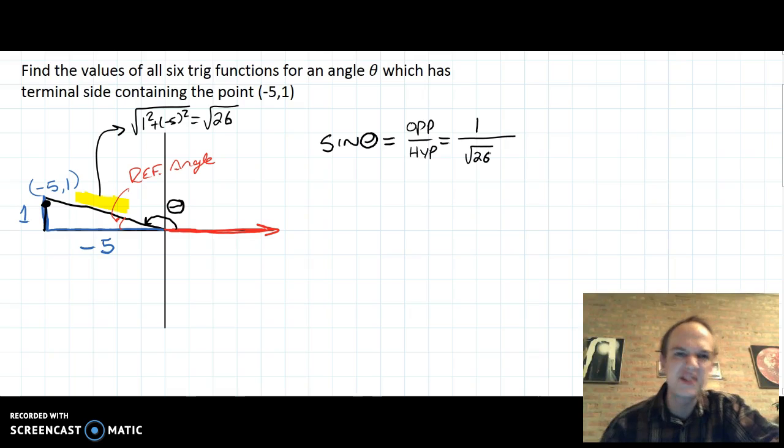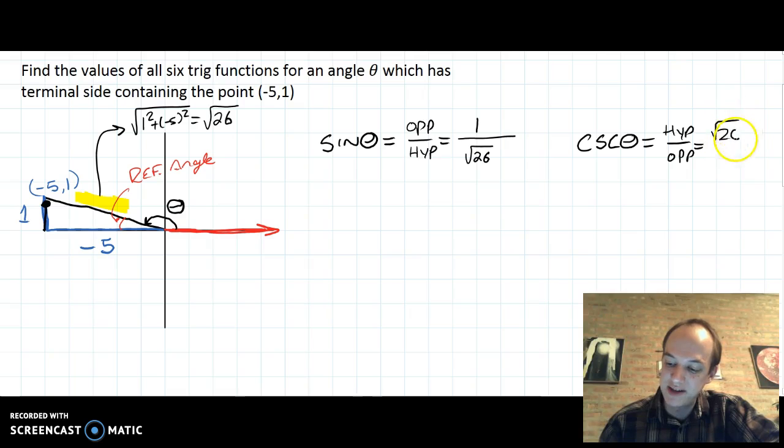It's asked us to find all six trig functions. Now that I've done the sine, I like to do the cosecant next because it is the reciprocal of sine. So if sine is opposite over hypotenuse, cosecant is going to be hypotenuse over opposite. In this case, that's just the square root of 26 divided by 1.